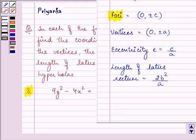We have the foci as (0, ±c), vertices as (0, ±a), eccentricity as e = c/a, and the length of latus rectum is found by multiplying 2 by b² and dividing their product by a.